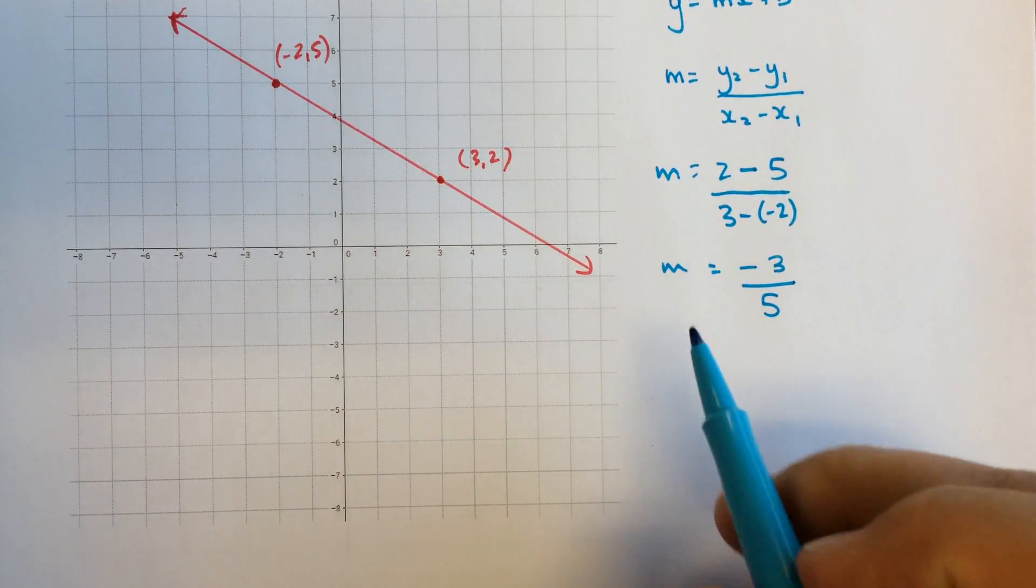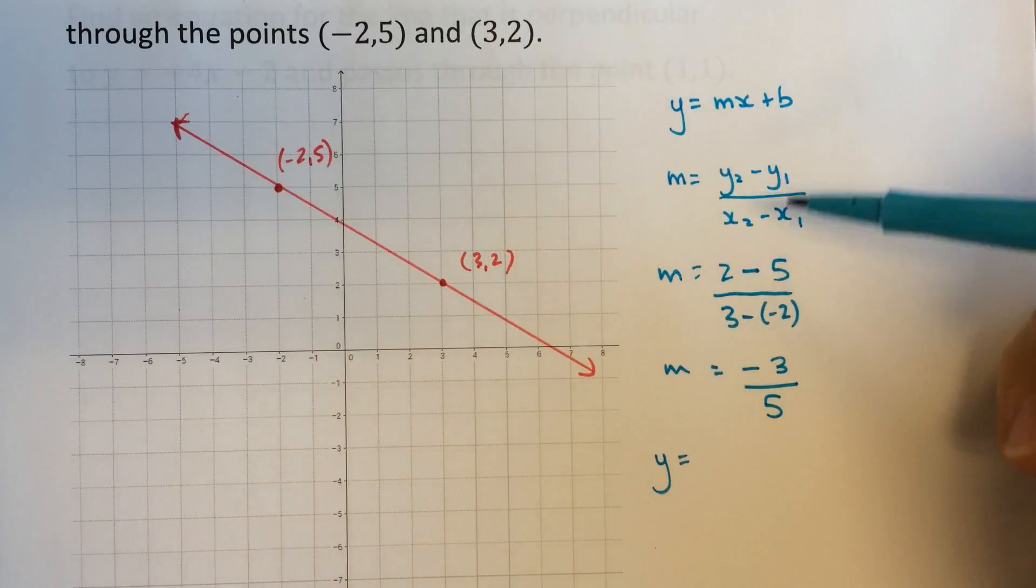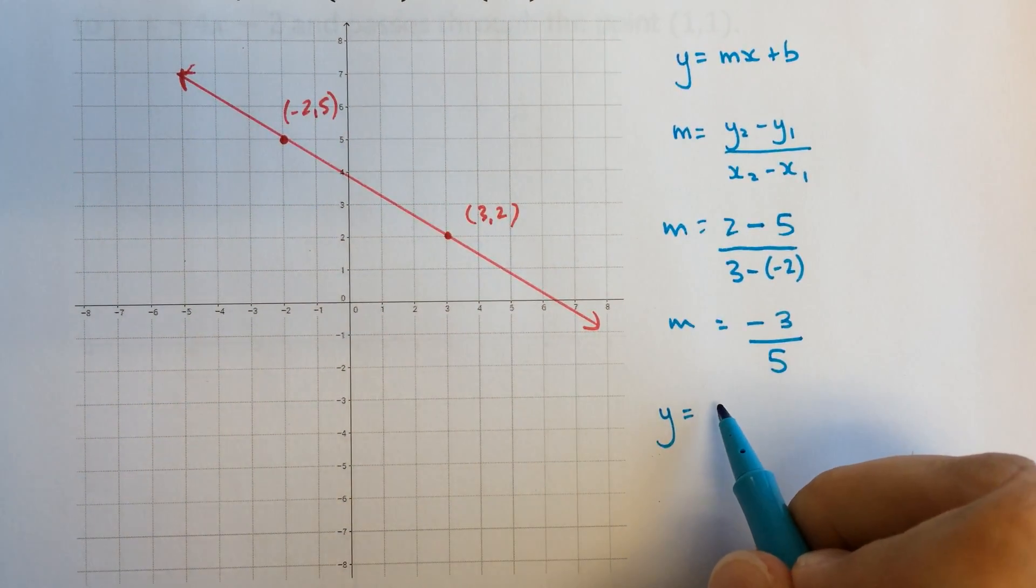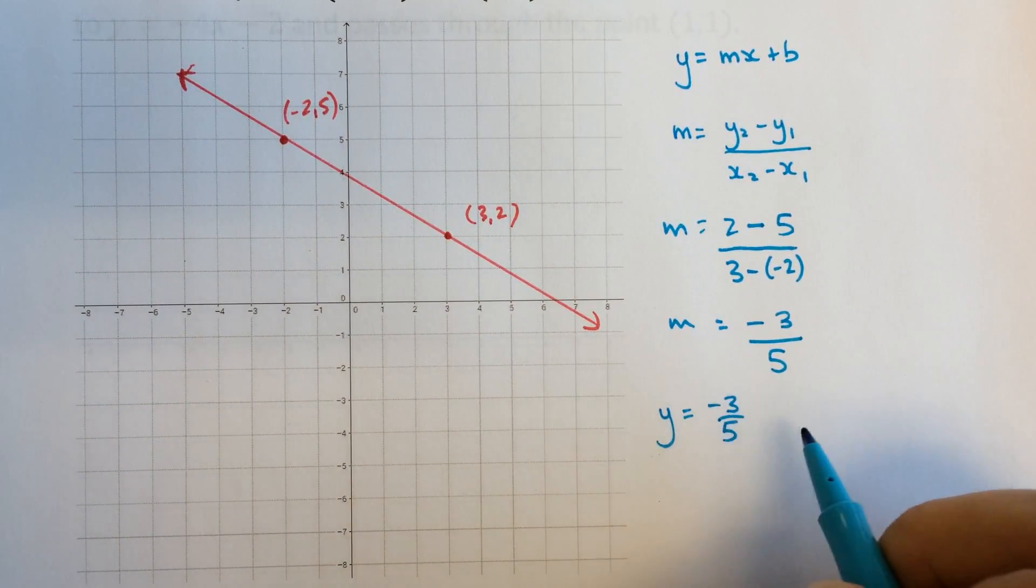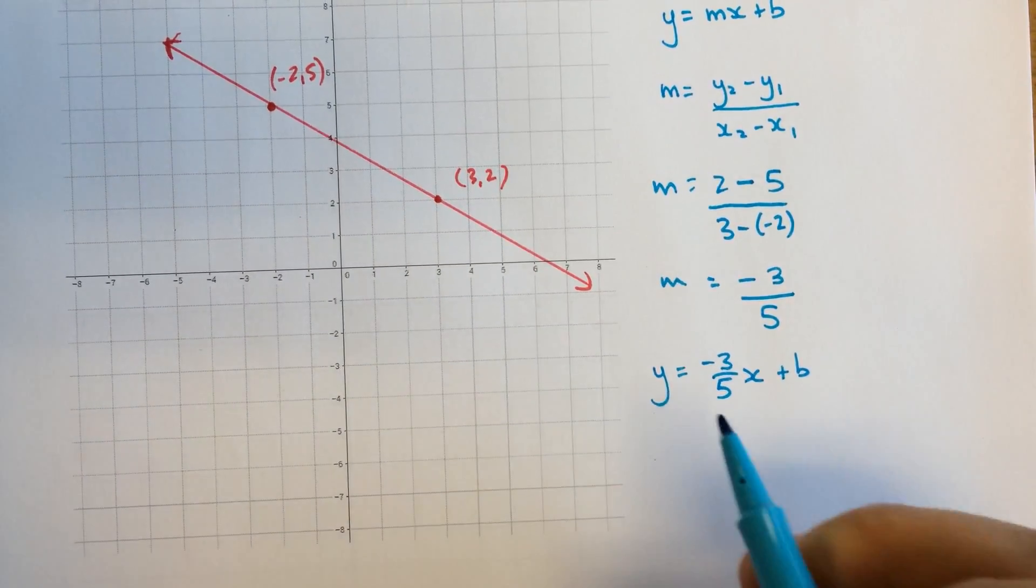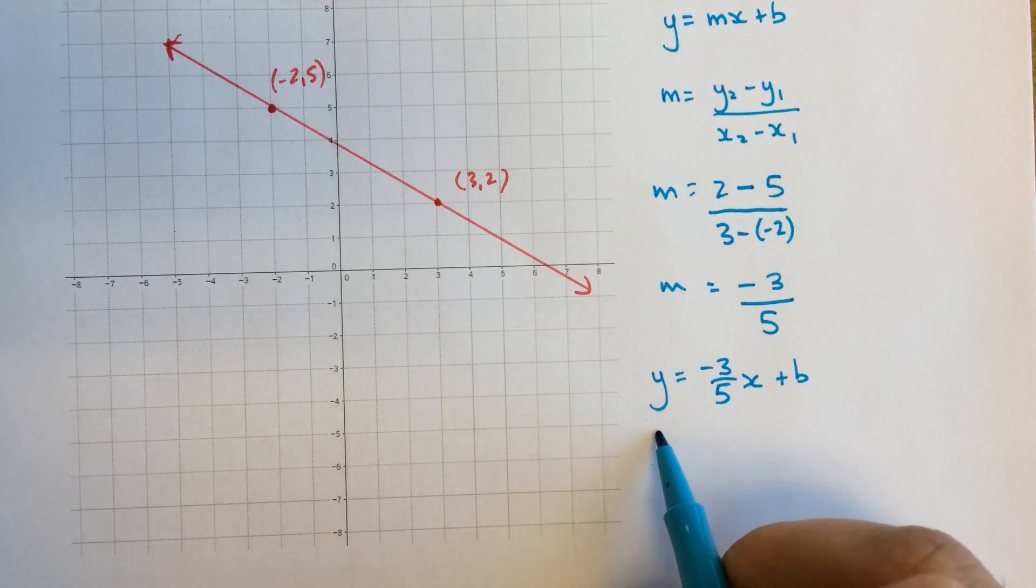Okay, so far we're about halfway there. That means I'm going to substitute this slope in for m in my general equation here. So negative 3 fifths x plus b. We still don't know b, but we do know a point. We actually know two points that are on this line. I can pick either one of them.